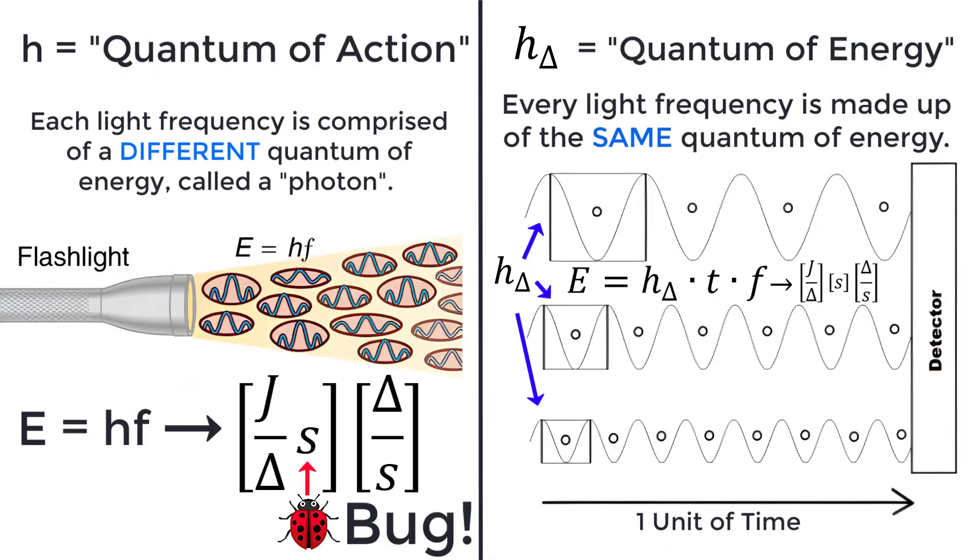In quantum mechanics, Planck's constant is referred to as the quantum of action. Each light frequency is comprised of a different quantum of energy called a photon.